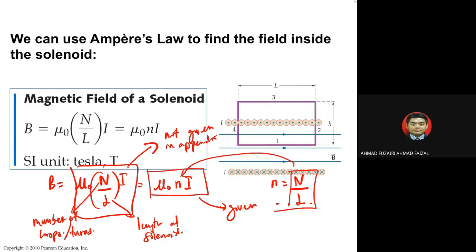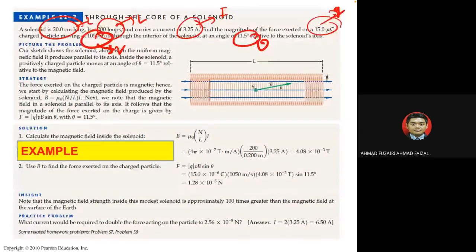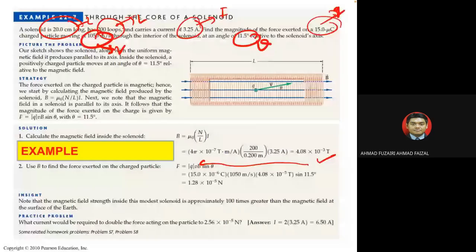Solenoid example: given length L, number of turns N, and current i, first find the magnetic field B using B = μ₀nI. Then use that B in F = qvB sin θ to find the magnitude of force on a charged particle. The answer is 1.2 × 10⁻⁵ N.